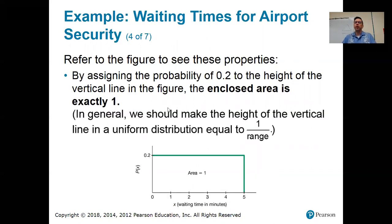All right. Now we come to the 0.2. By assigning the probability of 0.2 to the height of the vertical line, the enclosed area is exactly one. And why is that? Because the width of this rectangle is five, right? From zero to five. And so I need a number that satisfies five times blank equals one because the area of a rectangle is the width times the height. So the number that fills in that blank is 0.2. I need the reciprocal of five. All right. Five times one fifth is one. So by making this value 0.2, you get the area under the rectangle is one.